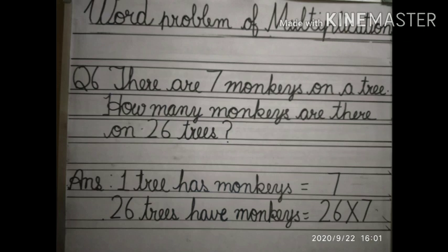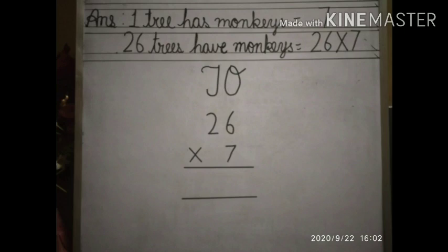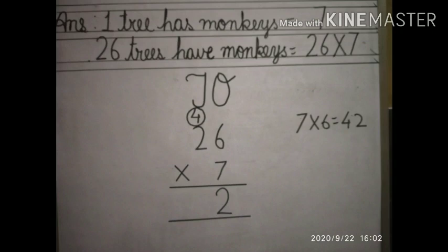Then we will write TO and arrange the digits according to their place value. We will start from one's place and then we will multiply. First, we will multiply 7 by 6. 7 ones are 7, 7 twos are 14, 7 threes are 21, 7 fours are 28, 7 fives are 35, 7 sixes are 42.